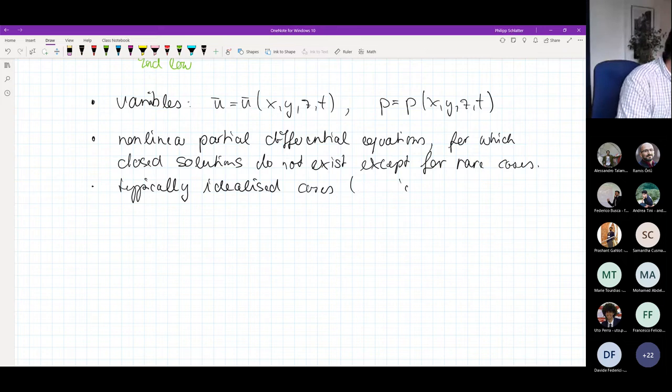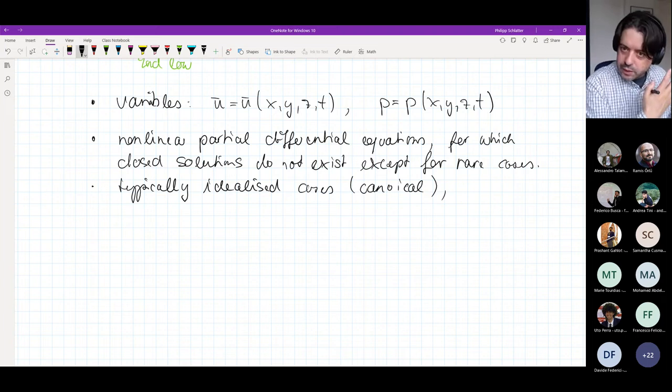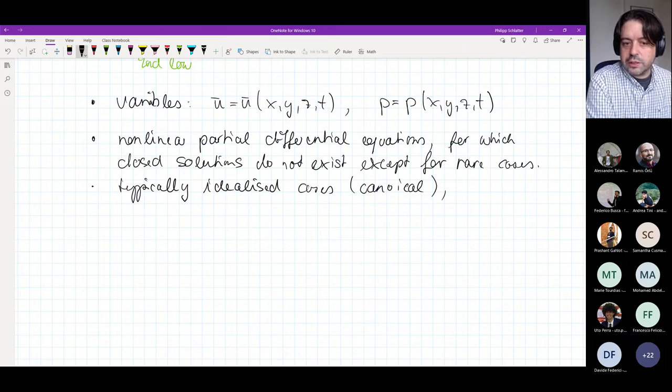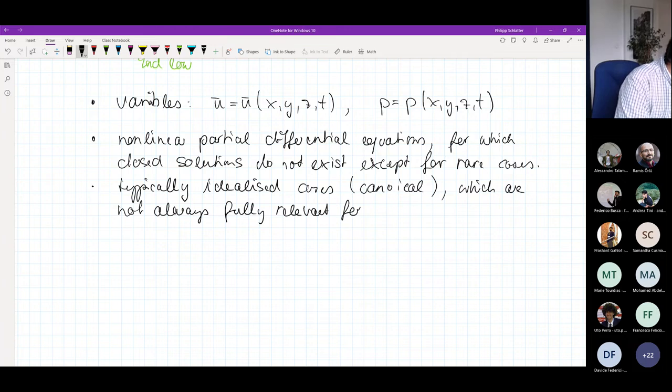Which are not always fully relevant for application. For instance, we can solve Couette flow, but we cannot get an exact solution of the flow around an airfoil. So typically idealized cases which are not always fully relevant for applications.